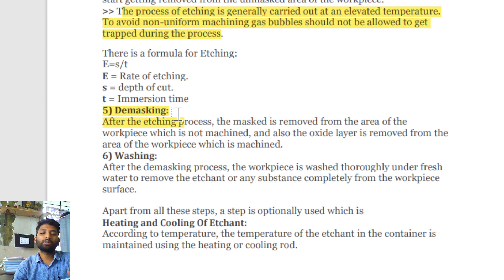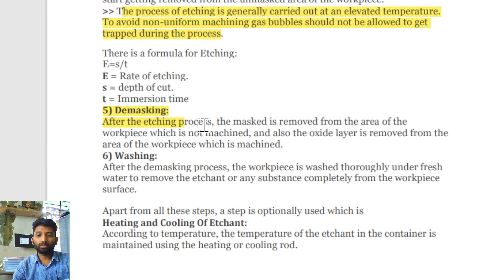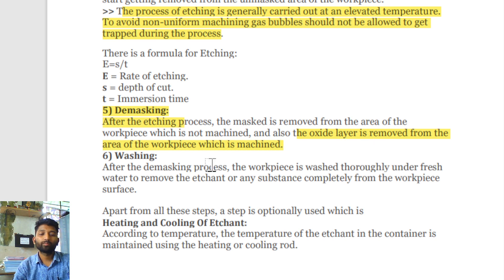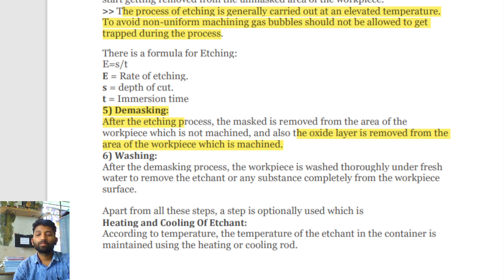After etching, the next step is demasking. In demasking, you remove the mask and any oxidized layer from the area of the workpiece that has been machined. Then finally washing is done — you wash the workpiece, and sometimes heating and cooling is also done. These are the steps followed for the chemical machining process.